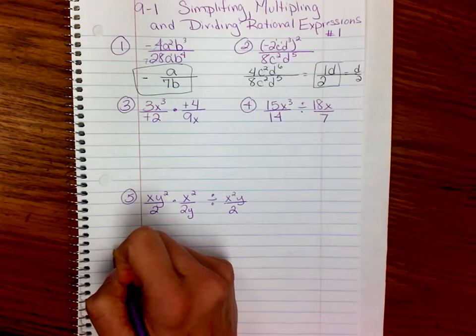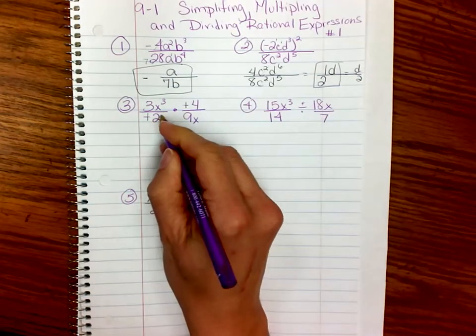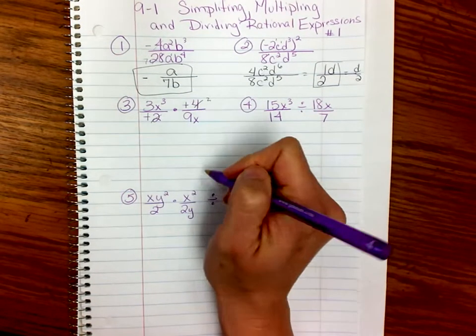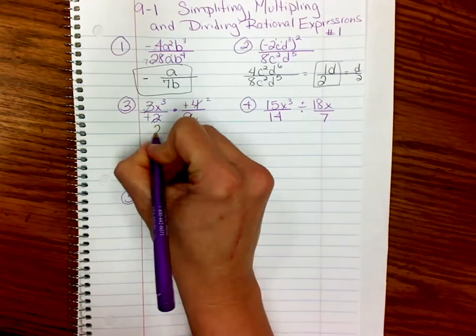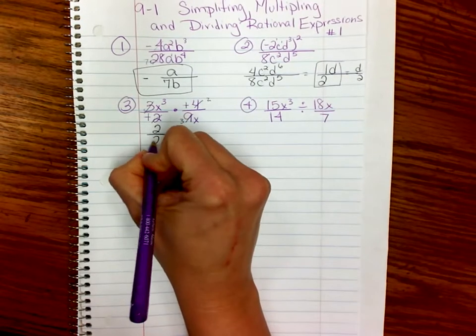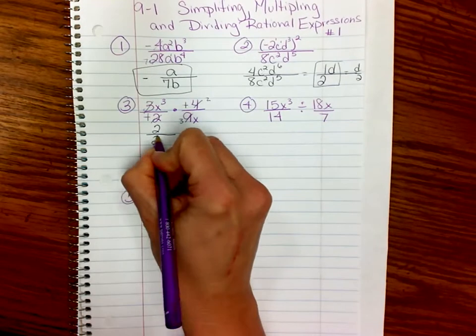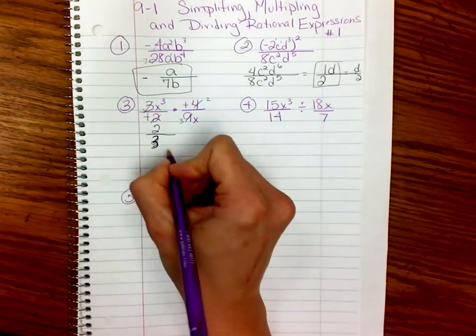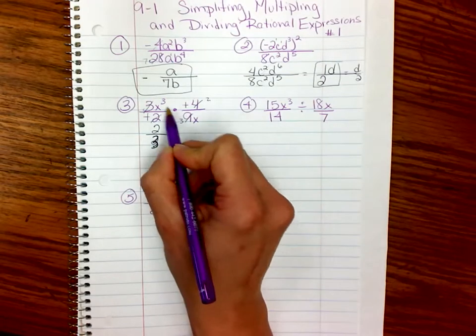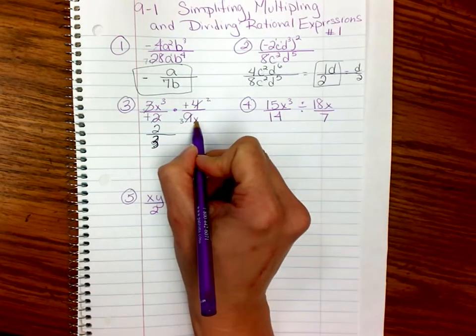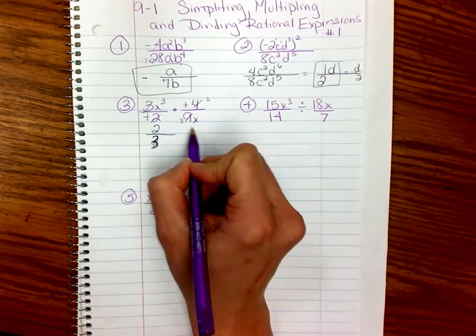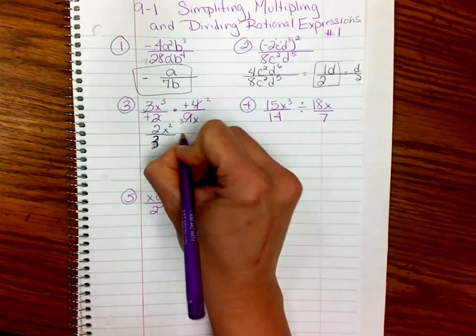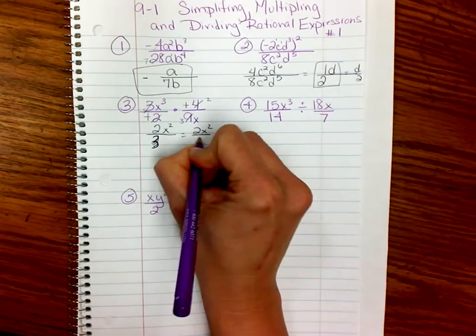There's 2 negatives. That's going to make a positive. Then I look at each term. 2 goes into 4 two times. 3 goes into 9 three times. So I know that in the top of my fraction, I'm going to have a 2. And in the bottom, I'm going to have a 3. And then I look at the variables. And I have an x cubed divided by an x. I can cancel, because 3 minus 1 is 2, so x squared. So my answer is 2x squared over 3.